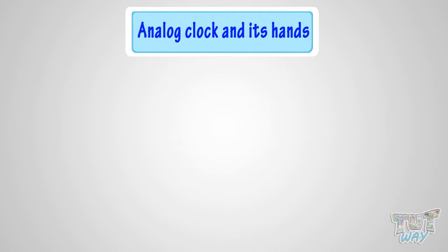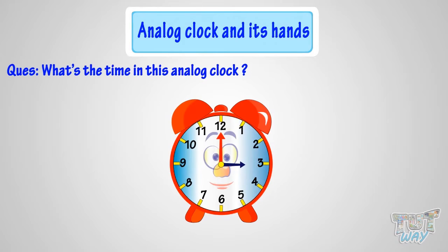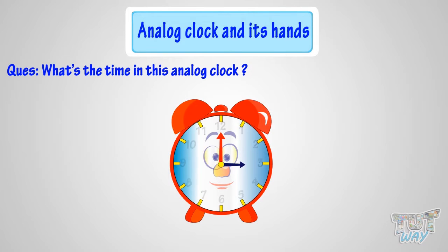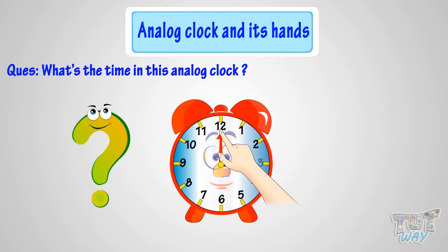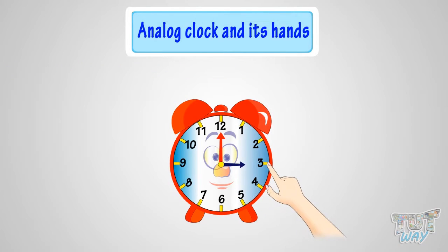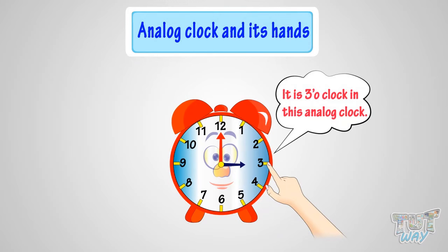Here we have another example. Can you tell me what's the time in this analog clock? Oops! No numbers written here. So, kids, you must be knowing the places of various numbers on the clock. This is the place of number 12, so the minute hand is pointing at number 12 — it's time to the hour. But to which hour? The hour hand tells the hour. And this place is at number 3, where the hour hand is pointing. So, it's 3 o'clock.